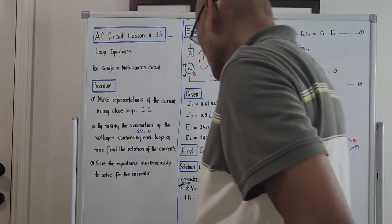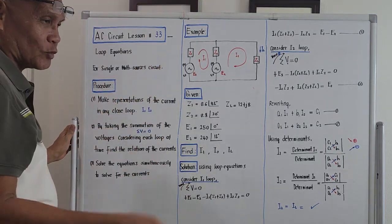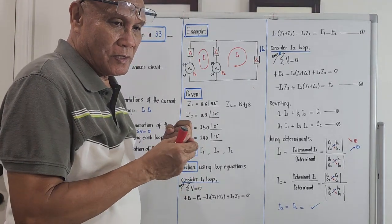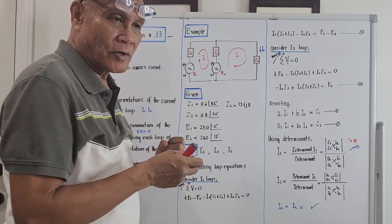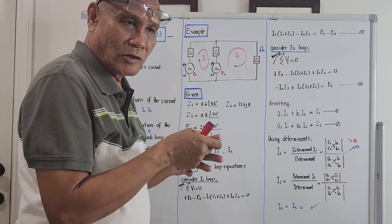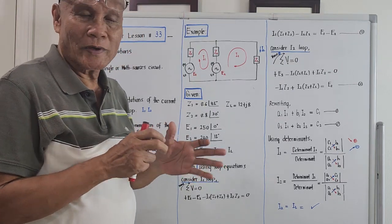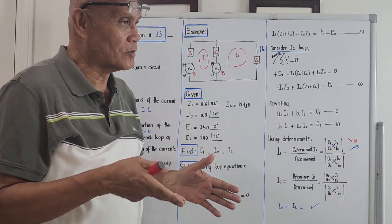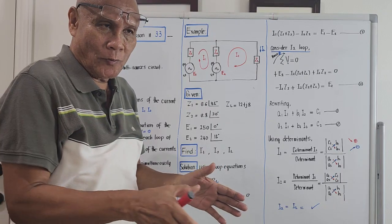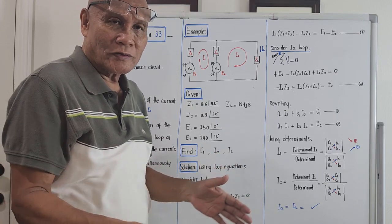The subject matter for tonight will be alternating current circuit, lesson number 33 — loop equations. We are done with Thevenin's theorem, Norton's theorem, the superposition theorem, and nodal theorem. This will now be the paper-type solution for solving currents in AC or DC circuits. For DC circuits it is much easier because the operation is just real-to-real, but under AC we must use complex numbers.